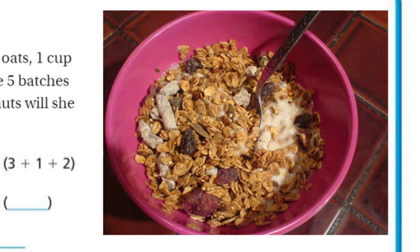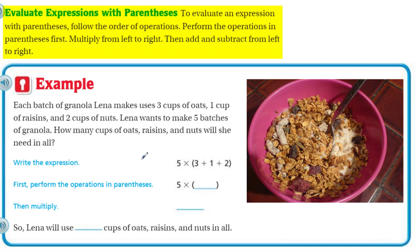Check this out. Looks like some yummy granola. Evaluate expressions with parentheses. To evaluate an expression with parentheses, follow the order of operations, which I'm going to write down right here. PEMDAS. Perform the operations in the parentheses first. That's why the P is first. Multiply from left to right. Then add and subtract from left to right. Just like we do when we read.